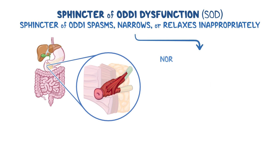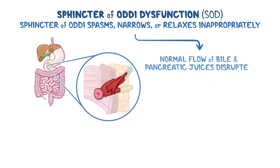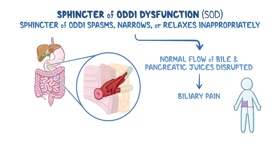With SOD, normal flow of bile and pancreatic juices is disrupted, leading to biliary pain, which is pain typically located in the upper right abdominal quadrant.